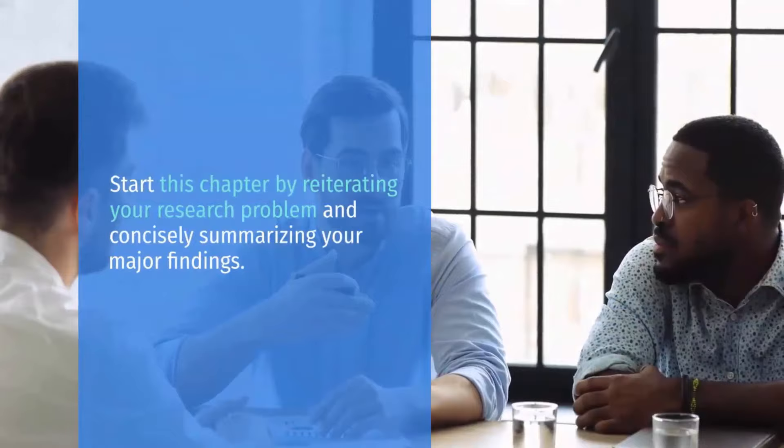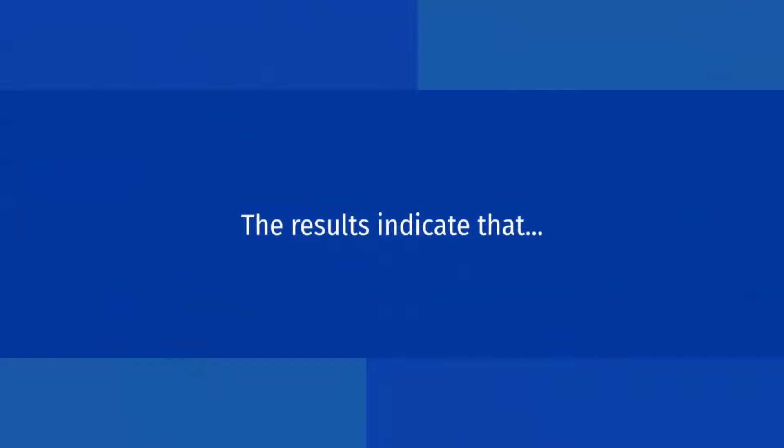How to write the discussion section in a research paper. Step 1: Summarize your key findings. Start this chapter by reiterating your research problem and concisely summarizing your major findings. Don't just repeat all the data you have already reported. Aim for a clear statement of the overall result that directly answers your main research question. This should be no more than one paragraph.